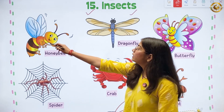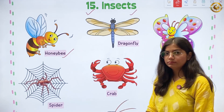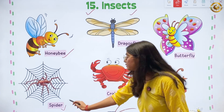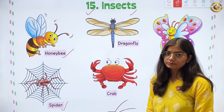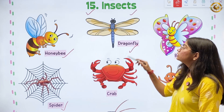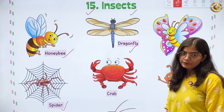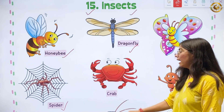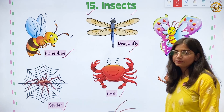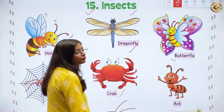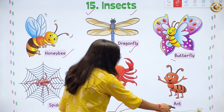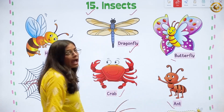So this one is honeybee. This one is a spider. This one is a dragonfly. And this is a crab. This one is butterfly. And this one is an ant.